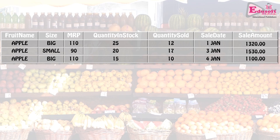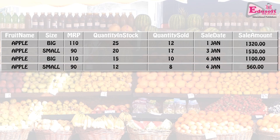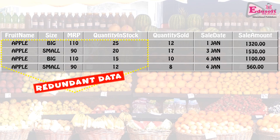Another sale on the same date: 8 kg of small apples sold, quantity in stock updated from 20 minus 8 to 12. After every sale, entries are made in the stock register. But notice something odd — after every entry, we have to repeatedly enter the fruit name, size, and MRP for every transaction. This is called redundant data. If making a sale, we should only enter the sales details; the rest should be taken care of automatically and not repeated.